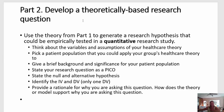For Part 2, you will think about the theory you have and develop a research question. You'll think about the variables in your research question and who this theory might apply to. Tell us a little about the patient population you're applying the research question to and why. You'll state a research question as a PICO question, state the null and alternative hypothesis, identify the independent and dependent variables, and provide a rationale for why you are asking this question.